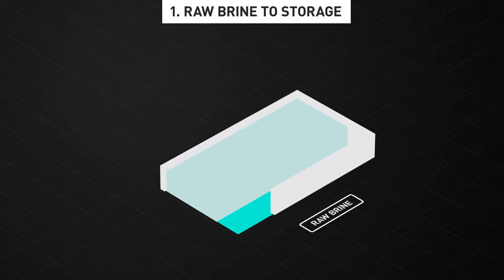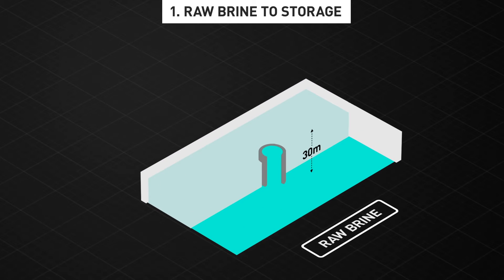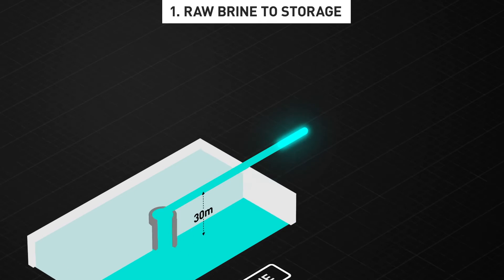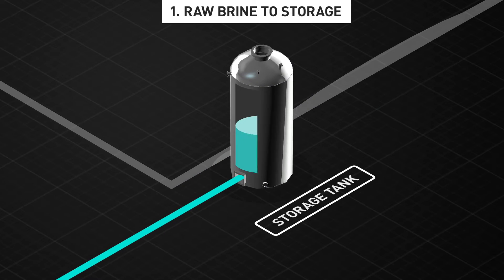The process starts with brine being pumped from a well of 30 meters in depth in the middle of the Salar, from where it travels along a pipe to be stored in tanks for processing.